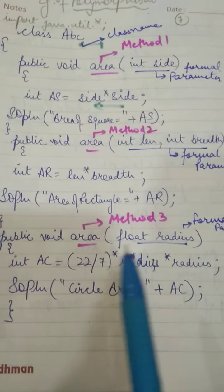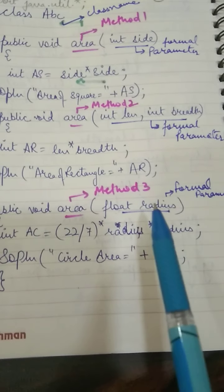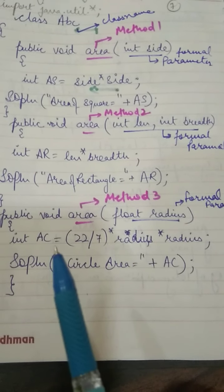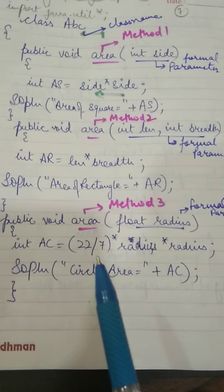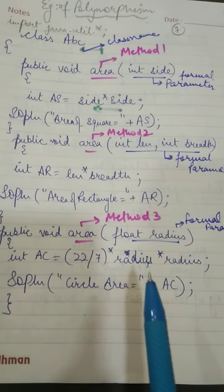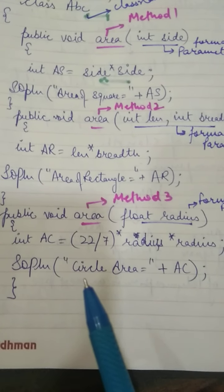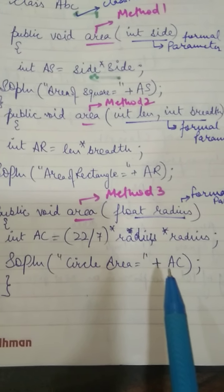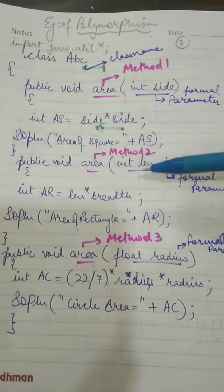The third method is again named area. It has one parameter but of float type. We take the radius from the user and calculate in the ac variable: pi * radius * radius, where pi's value is 22/7. The formula is pi r squared. We calculate and display the area of the circle using System.out.println from the ac variable.